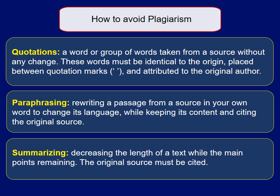The second method is paraphrasing, which means rewriting a passage from a source in your own words to change its language while keeping its content, and citing the original source. The third method is summarizing, which means decreasing the length of a text while the main points remain. The original source must be cited. These three methods of writing are used to avoid plagiarism.